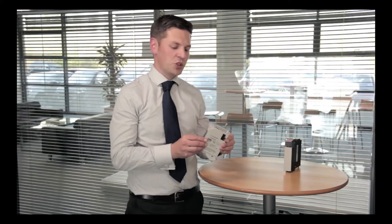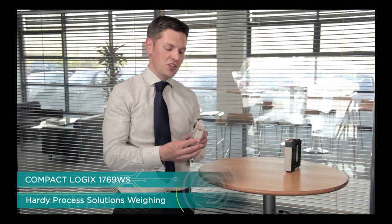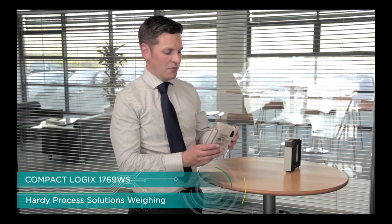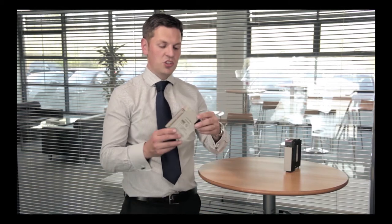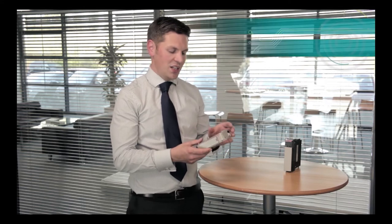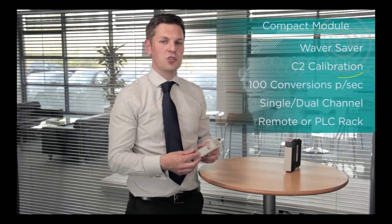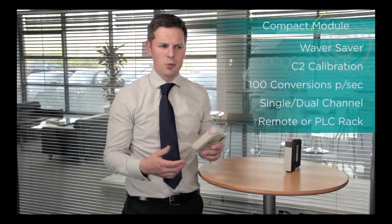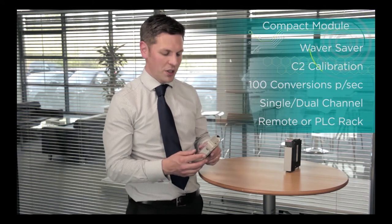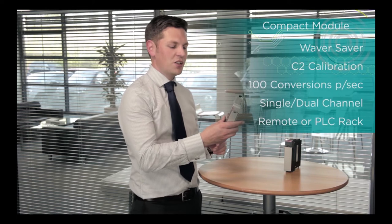The next one is for the Compact Logix range, the 1769 WS, that's the Hardy part number. This is a standard Compact Logix card effectively. It goes in the rack like any other card would and it gives you all the Hardy features such as waver saver, C2 calibration, all that useful stuff that Hardy have recorded some really good videos about, on an in-rack card.